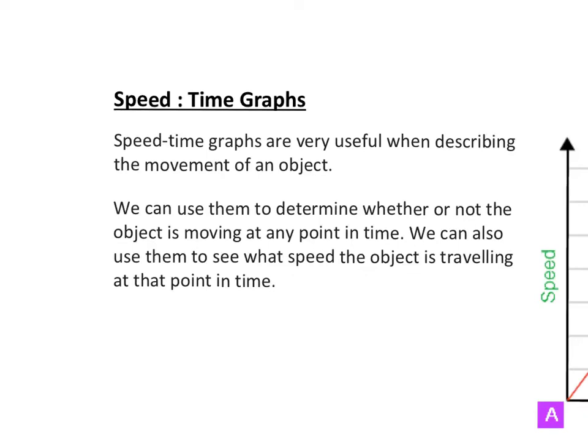Speed time graphs are a move on from distance time graphs. Instead of putting distance on your y-axis, you put speed on the y-axis. So that changes the shape of the graph, changes how the same journey is represented, so the graphs look different.